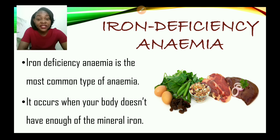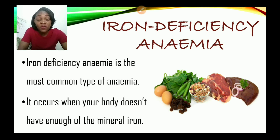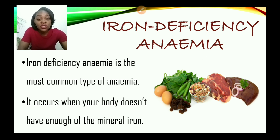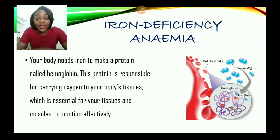Iron deficiency anemia is the most common type of anemia — there are different types, such as megaloblastic anemia where red blood cells enlarge, but we're not looking at that today. Iron deficiency anemia occurs when your body doesn't have enough of the mineral iron. Your body needs iron to make a protein called hemoglobin, which is responsible for carrying oxygen to your body's tissues, essential for tissues and muscles to function effectively.